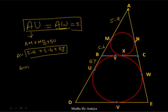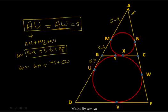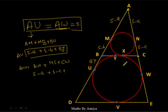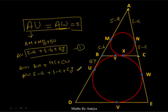Now working on AW: AW = AN + NC + CW. The value of AN is S − A, NC is S − C (tangent from point C), and CW is the tangent from C to the bigger circle, so CW = CY. These form equations 1 and 2 for AU and AW.